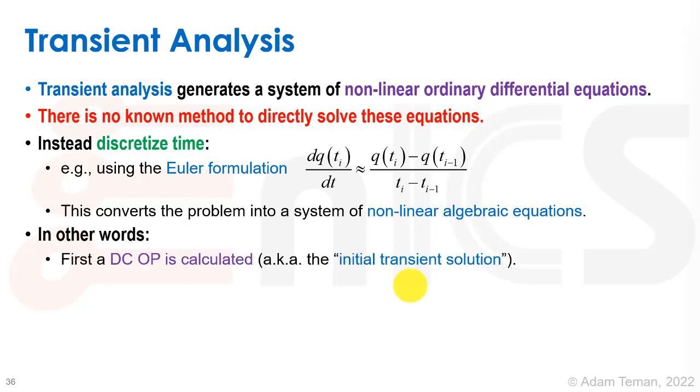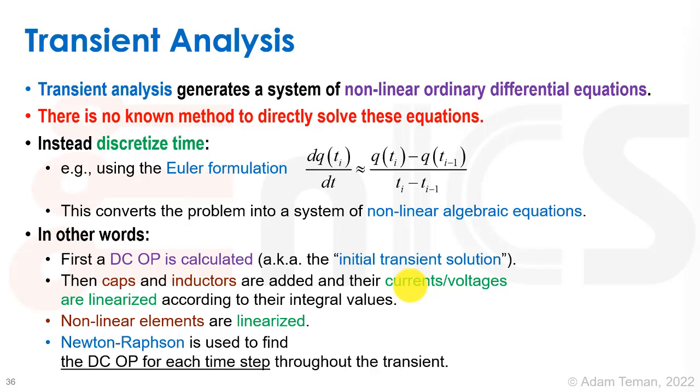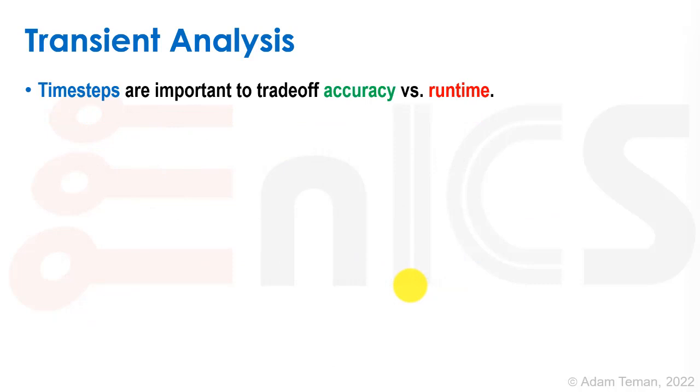What we're going to do is first solve a DC operating point, that's the initial transient solution. Then we take the caps and inductors, add their currents and voltages that are linearized according to their integral values, and linearize non-linear elements. Then we use Newton-Raphson method to find the DC op for each time step throughout the transient.